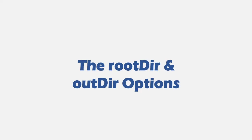The next two important compiler options we are going to talk about are rootdir and outdir. When your project gets bigger you might want to organize your files. Typically you would not want all your files lying around in the root project folder. Generally you will see in many projects a source folder for application code and a dist folder for output files to publish to the production server.